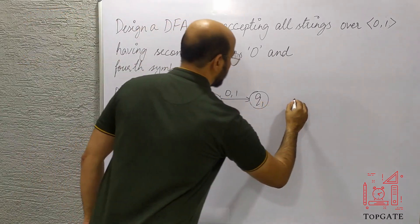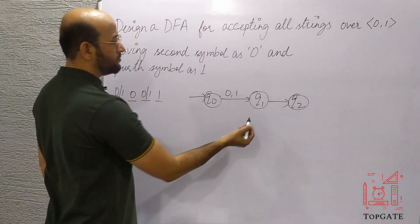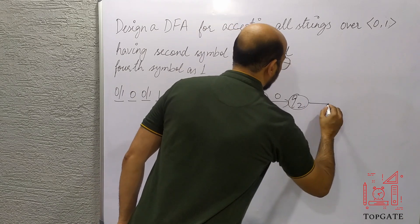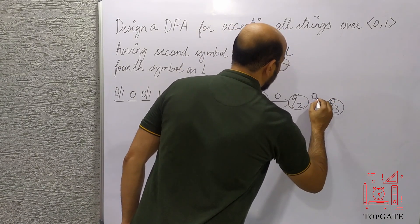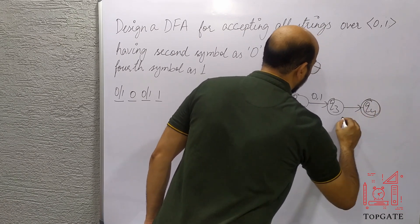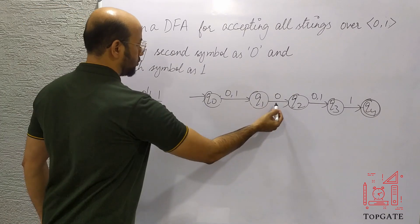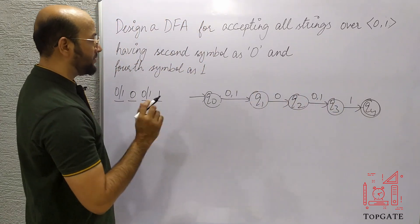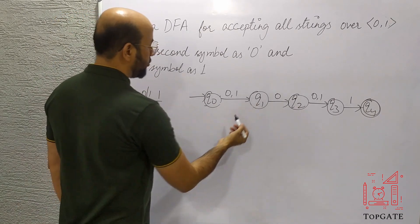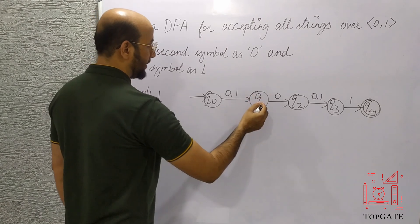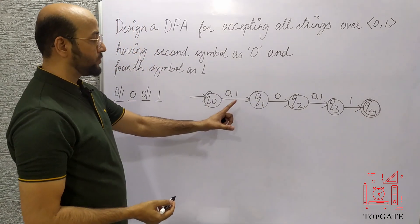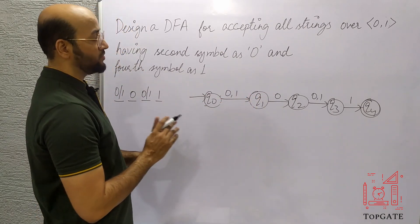From Q1, it says the second symbol of the string should be exactly 0. So from Q1 to Q2 I take transition on 0. The third position is again anything, so from Q2 to Q3 I can have 0 or 1. Q3 goes to Q4, which we will make the final state, on input 1, since the fourth symbol should be exactly 1.